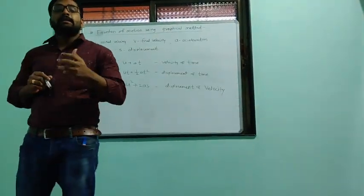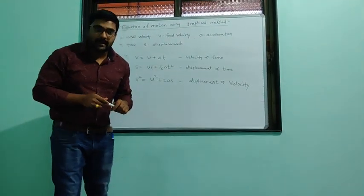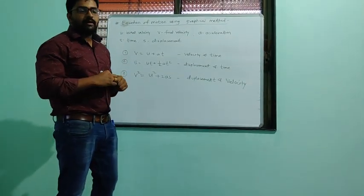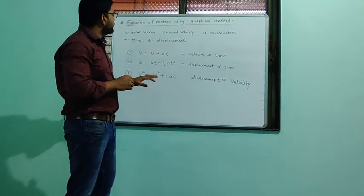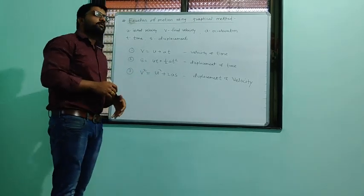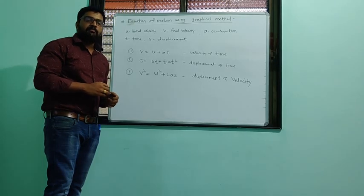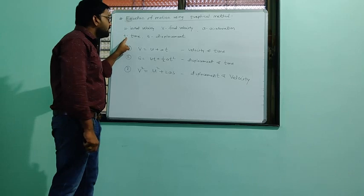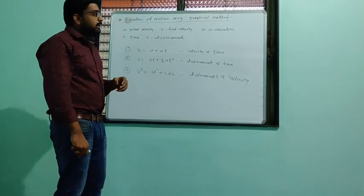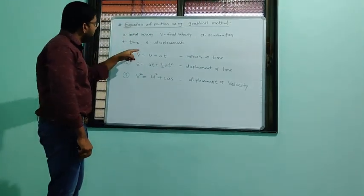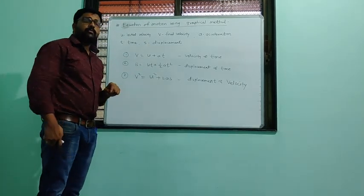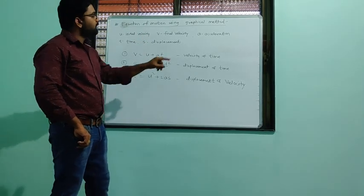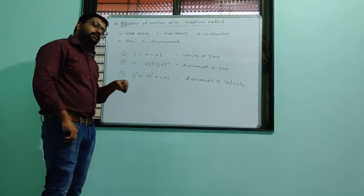Suppose an object is in linear motion — motion along a straight line. We can express this motion using three equations already defined by Sir Isaac Newton, called Newton's laws of motion. Here: U = initial velocity, V = final velocity, A = acceleration, T = time, and S = displacement.